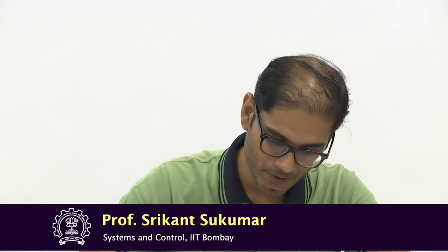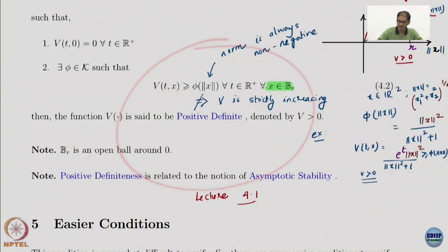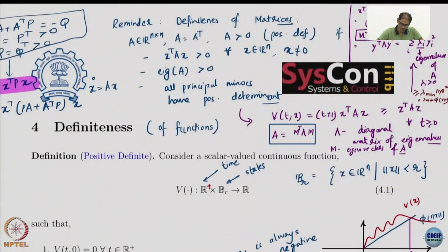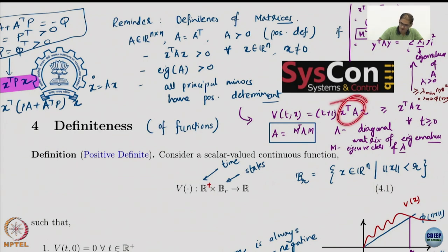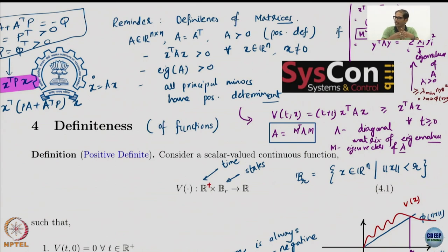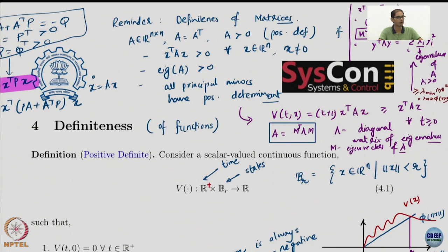We have the definition of positive definiteness and I want to connect it to the matrix. I want to claim that the matrix function x transpose Ax, or basically if I add a t plus 1 factor it does not change much. This is also a positive definite function in the sense of how we talk about positive definiteness. I want both definitions to align — x transpose Ax, given that A is positive definite, is a positive definite function.